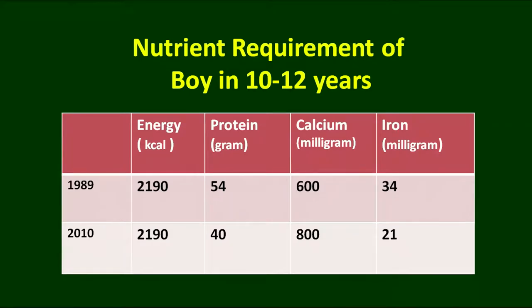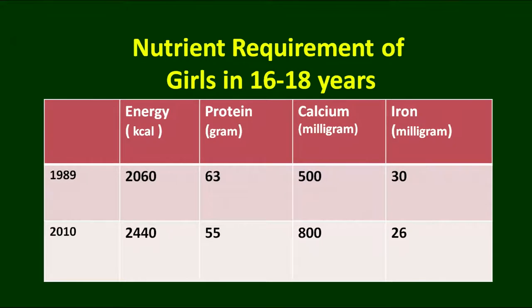For boys in the age group 10 to 12 years, energy requirement previously and now is more or less the same, protein requirements are 40 grams, calcium requirements are 800 milligrams, and iron is 21 milligrams. Now talking about adolescent girls specifically: energy requirement is 2440 calories, which is much higher than the adult. Protein requirements are 55 grams, similar to adults, and calcium requirements are also similar to adults, but iron requirement is still high at 26 milligrams per day.